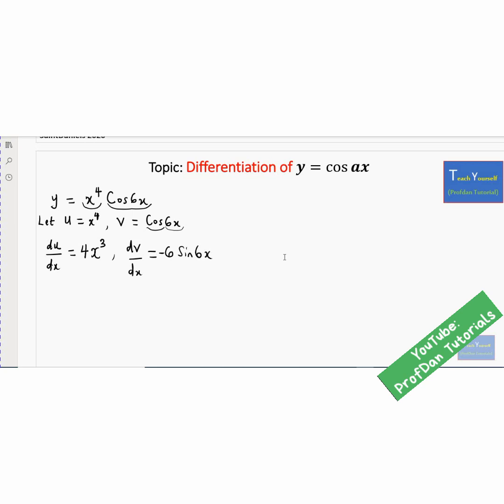So next is apply your product rule, which says dy/dx is equals to the first variable that we have, differentiation of the second variable, plus the second variable differentiation of the first, which is this. And if we apply that, we have u, which is x power 4. The dv/dx, we got minus 6, sine 6x, plus v, which is cos 6x. And that multiplies du/dx, which we got as 4x power 3. So this is it.